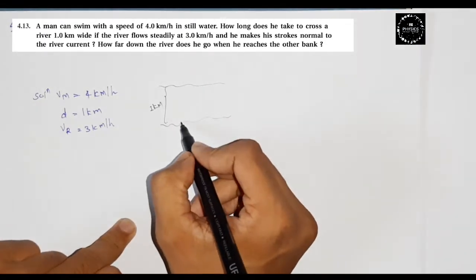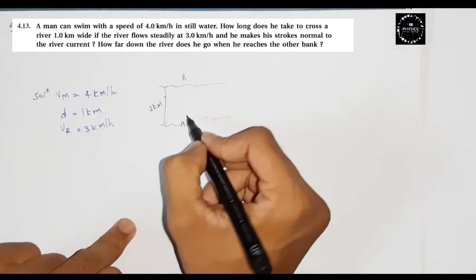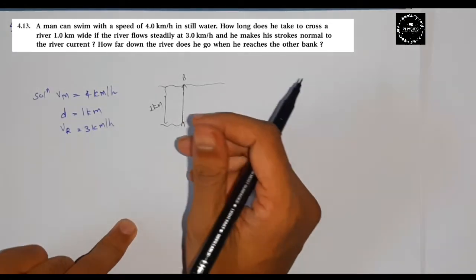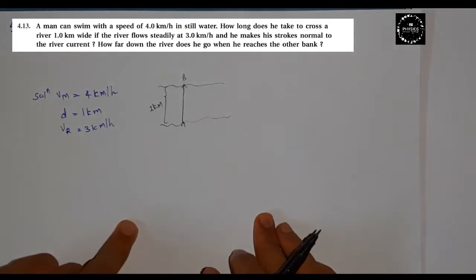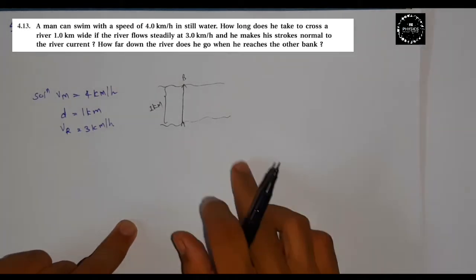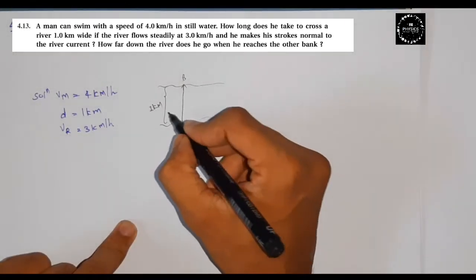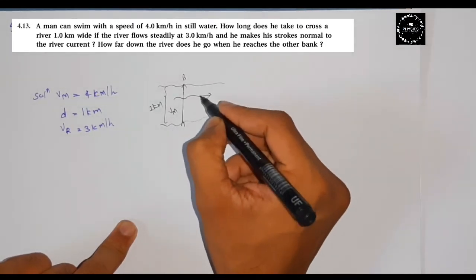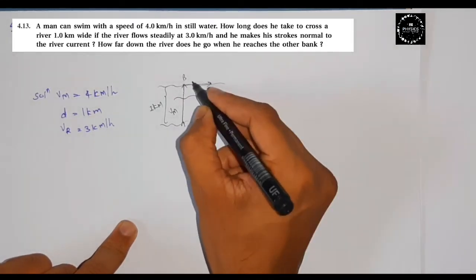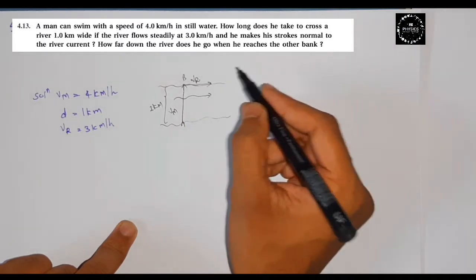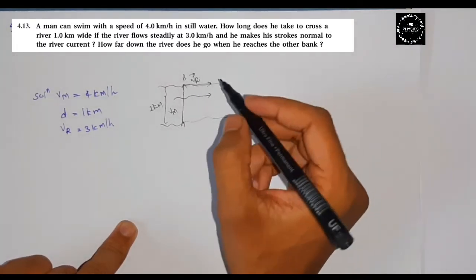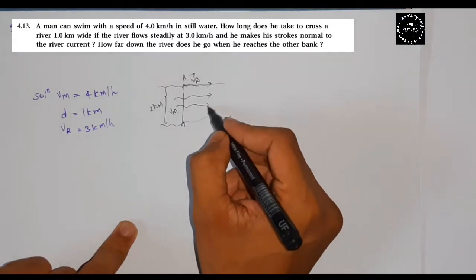The man's speed in still water means that if water doesn't flow, then the speed is Vm. But now the river is flowing, so we have the velocity of the river which is Vr. We know that if this flow occurs, the man will be affected.